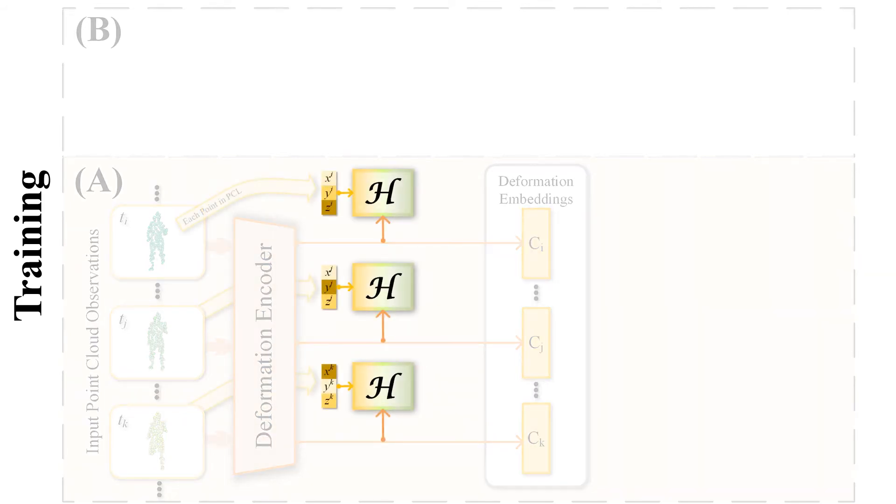We utilize conditional real NVP or NICE shown as the box marked with H to implement the invertible canonical maps, which takes input coordinates in the deformed frame and transforms them to the corresponding canonical coordinates conditioning on the deformation embeddings.